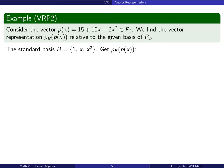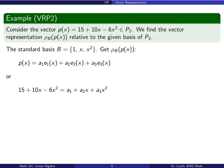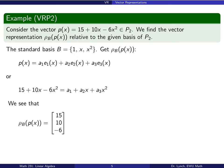Things get more interesting when the vector space is not a space of column vectors. Consider p(x) from P₂, the set of all polynomials of degree at most 2. Using the standard basis e₁ = 1, e₂ = x, e₃ = x², we write p(x) as a linear combination. It's quick to see a₃ = −6, a₂ = 10, and a₁ = 15. So ρ_b(p(x)) = (15, 10, −6)ᵀ.